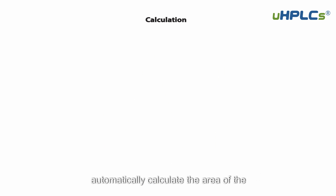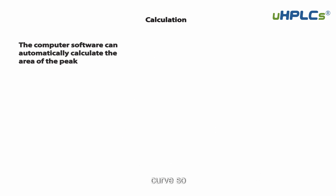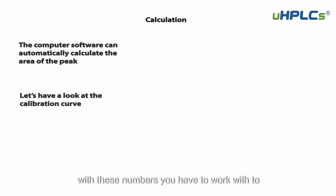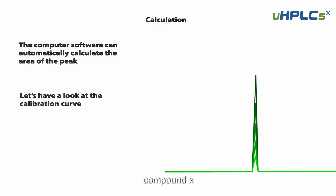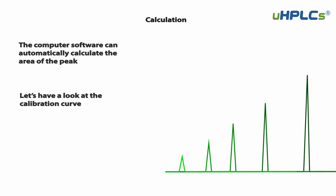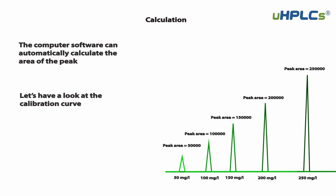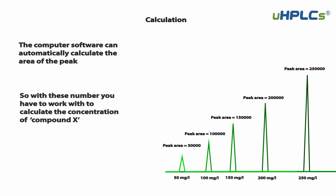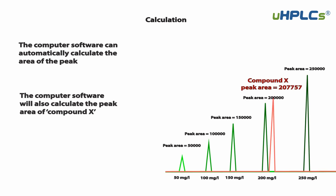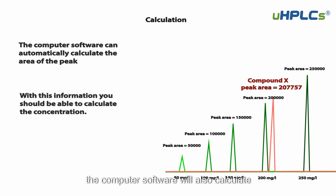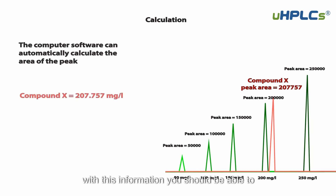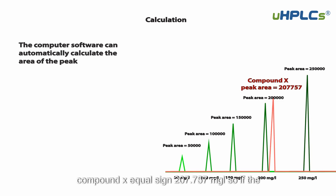The computer software can automatically calculate the area of the peak. Let's have a look at the calibration curve — with these numbers, you have to work out the concentration of compound X. The software will also calculate the peak area of compound X, and with this information you should be able to calculate the concentration. Compound X equals 207.757 mg/L.